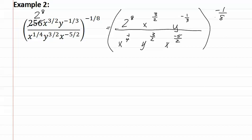Now let's check each of our denominators. Let's start with the x's: two of the x exponents have a denominator of two and one has a denominator of four, so we need to make them all fourths — giving us six-fourths and negative ten-fourths. Next, the y's have a common denominator of six, so we multiply one by two and the other by three, giving us nine-sixths and negative two-sixths.